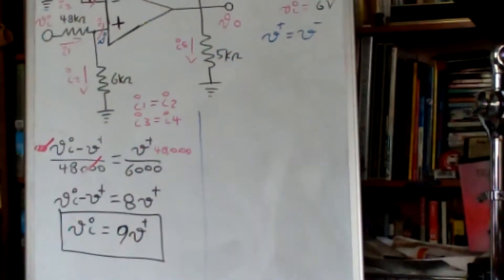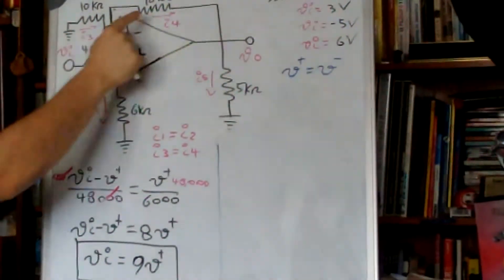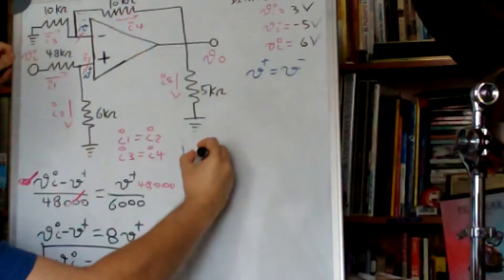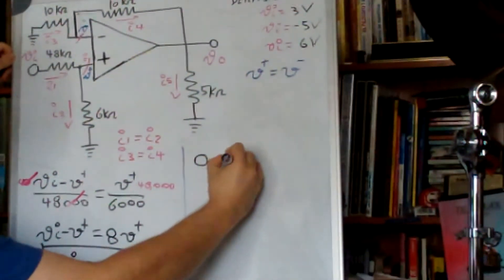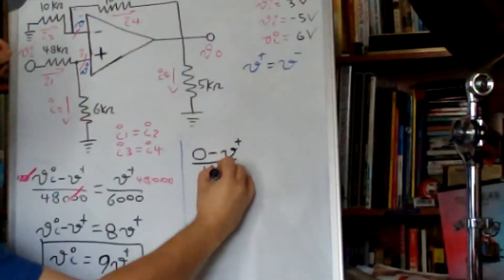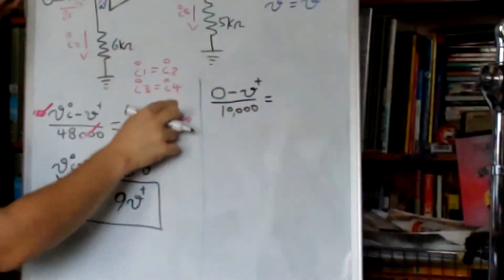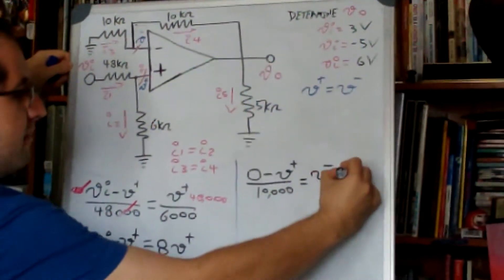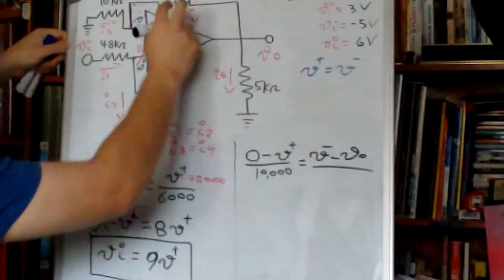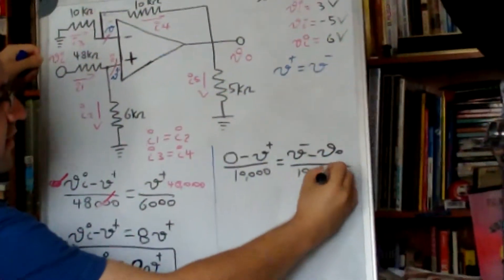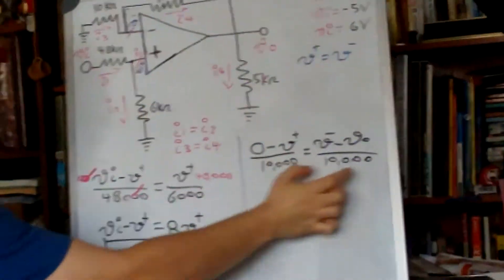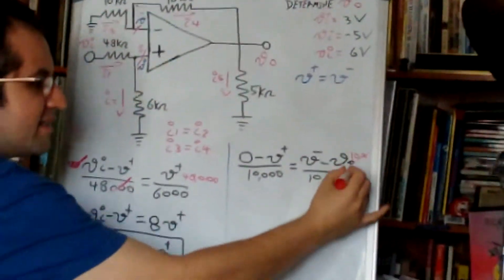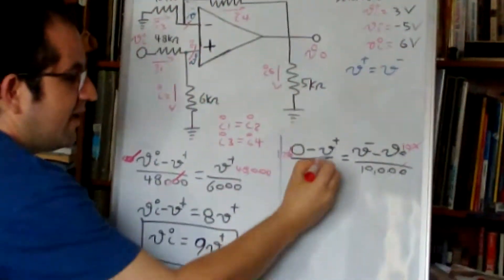To analyze this node, we know that i3 is equal to i4. We define i3 as ground minus V minus over 10k, so that is zero minus V minus over 10k. And that is equal to i4, which is V minus minus V out over 10k. Multiplying both sides by 10k simplifies the equation.